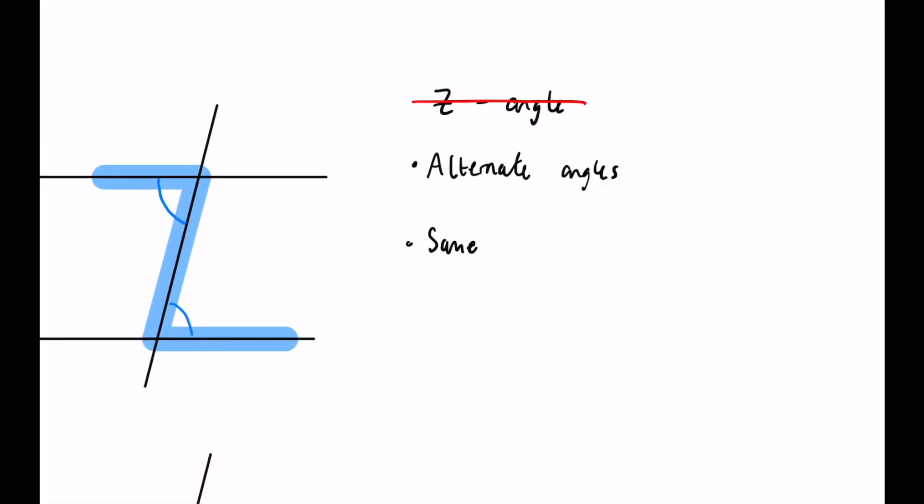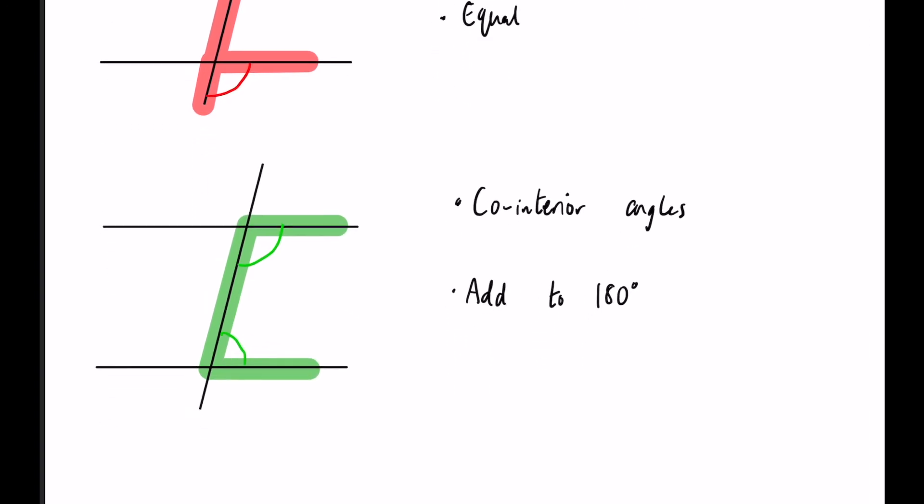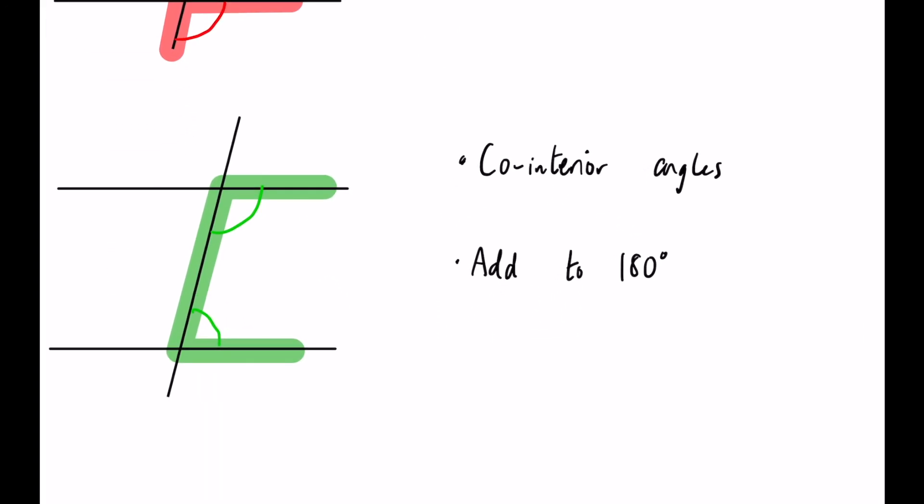Now in terms of remembering it, I always remember personally that the Z pairs with the alternate angles because Z and A are opposite ends of the alphabet. Now going down to C and the co-interior angles, you can see the C shape and the fact that co-interior begins with a C helps me remember this one.